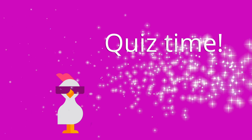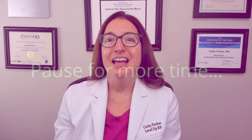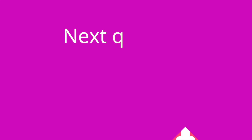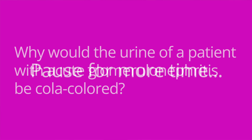It's quiz time, and I've got five questions for you. Question number one: acute glomerulonephritis commonly follows a blank infection. The answer is a strep throat infection. Question number two: why would the urine of a patient with acute glomerulonephritis be cola-colored? The answer is due to the presence of blood in the urine.